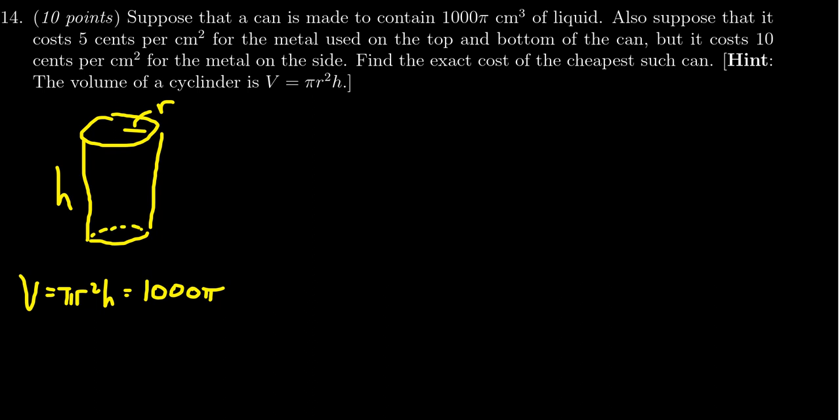Suppose it costs 5 cents per square centimeter for the metal used on the top and bottom of the can, but 10 cents per square centimeter for the metal on the side. The top and bottom cost differently than the side, and we want to find the exact cost of the cheapest can. We're trying to minimize cost, so cost is our optimizing function. The statement about volume is the constraint.